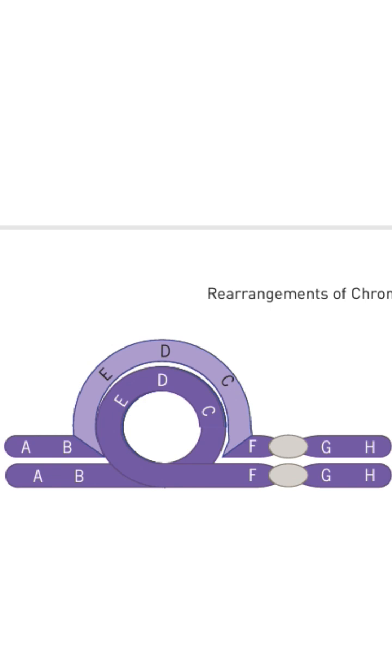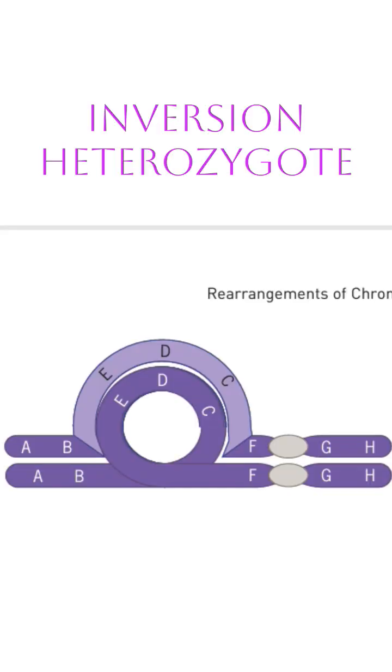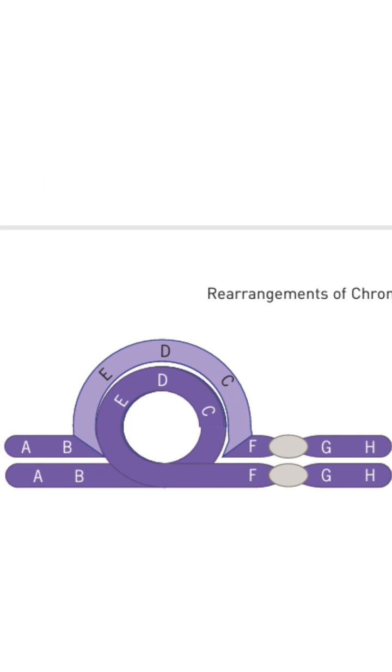If one chromosome is inverted and the homologous one is not, it is called an inversion heterozygote. During pairing in meiosis, proper loop formation occurs in the inverted region to align the chromosomes.